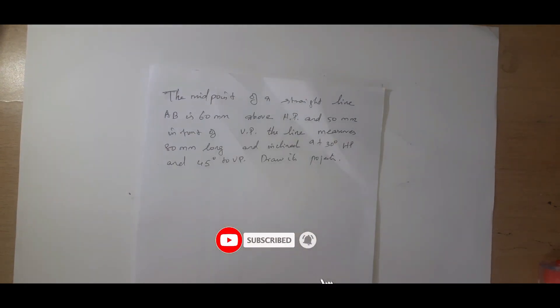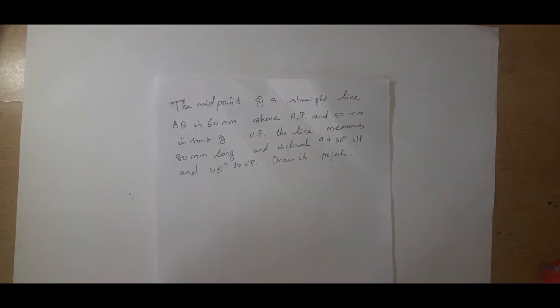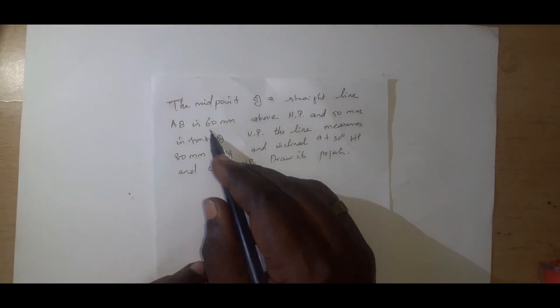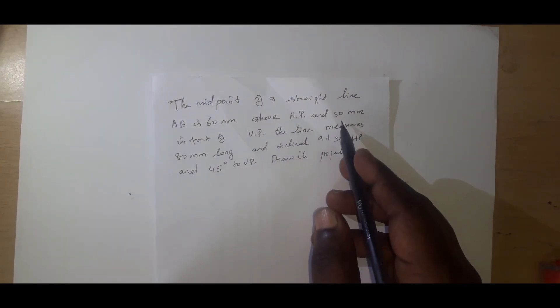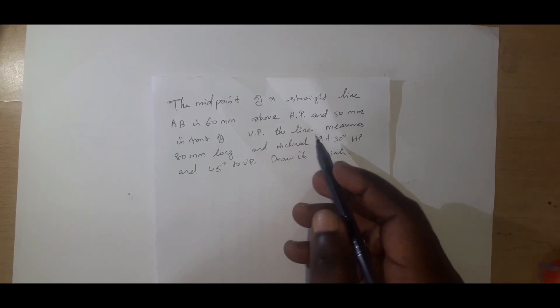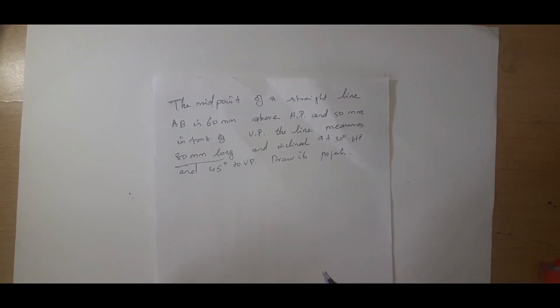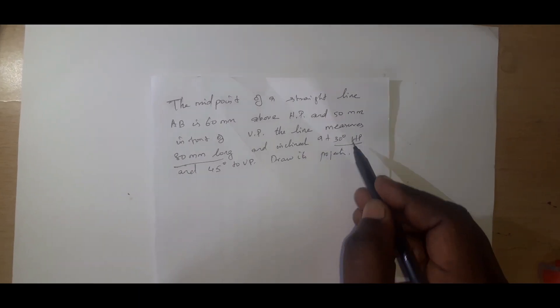Hello students. The next question is the midpoint problem. The midpoint of a straight line AB is 60mm above HP and 50mm in front of VP. The line measures 80mm and is inclined at 30 degrees to HP and 45 degrees to VP.